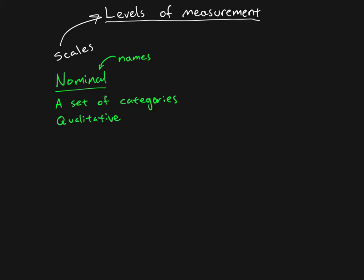The next level of measurement would be something we call ordinal. And just like with nominal, the name is quite nice. It tells you sort of what it is. This means having to do with the order of things. So on an ordinal level of measurement, what we're dealing with is a set of ordered categories, or we might say ranks.